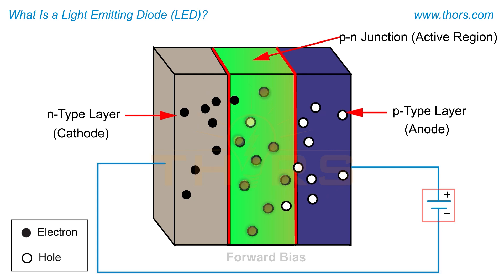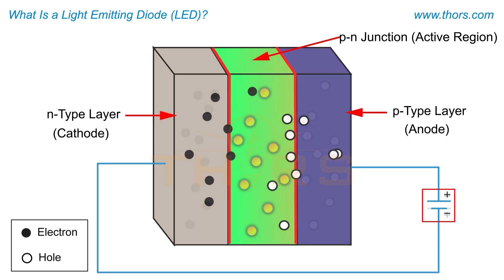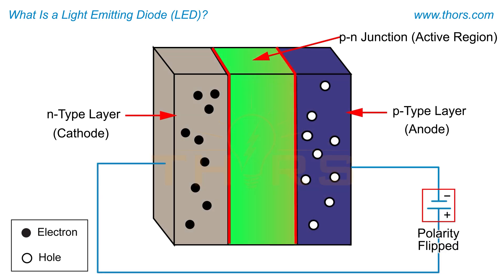When the polarity is flipped, the LED stops conducting, due to the voltage being applied in the reverse direction, also known as reverse bias.